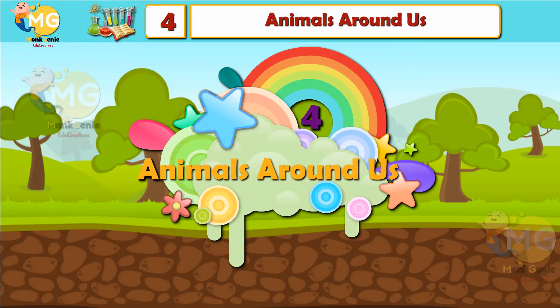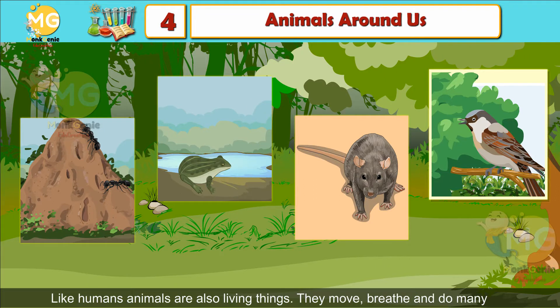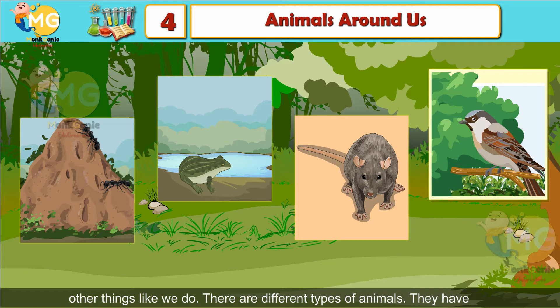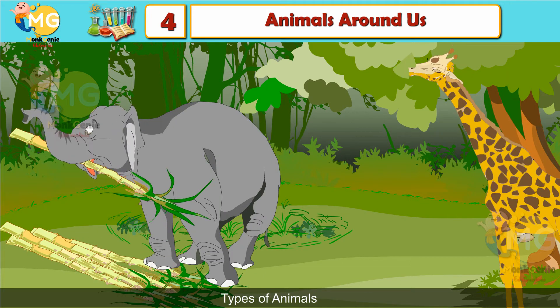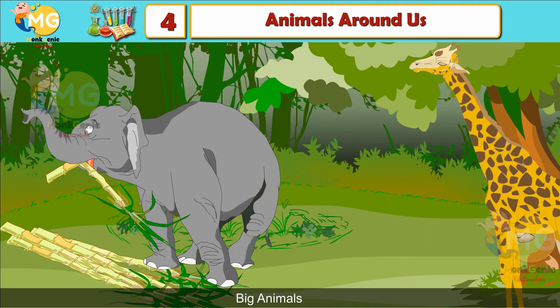Chapter 4: Animals Around Us. Like humans, animals are also living things. They move, breathe, and do many other things like we do. There are different types of animals. They have different sizes, habits, and features.